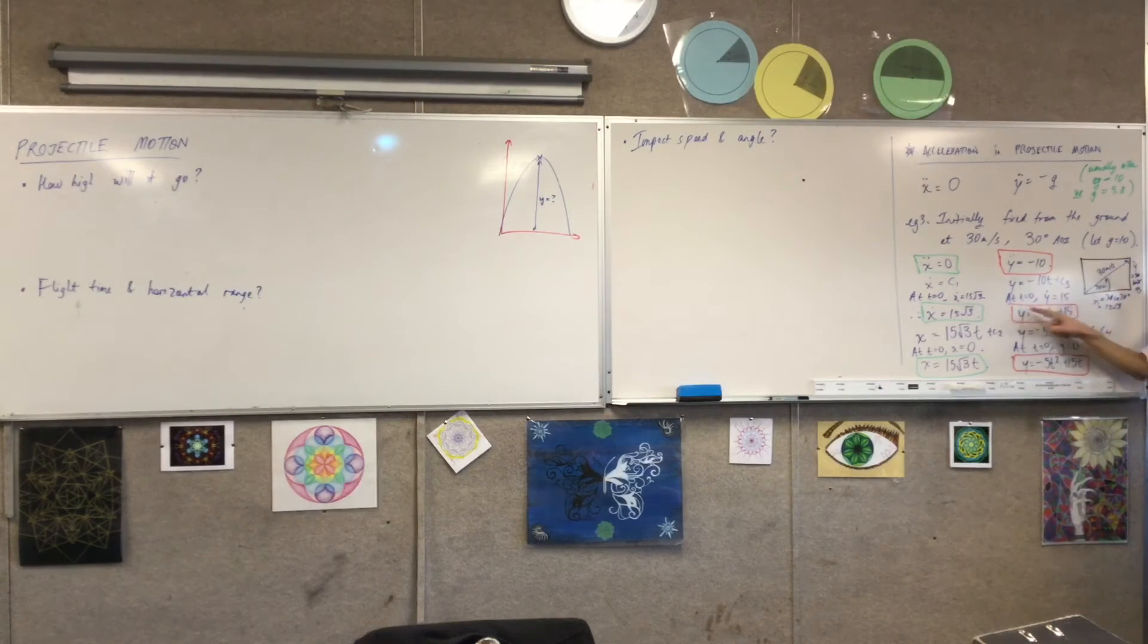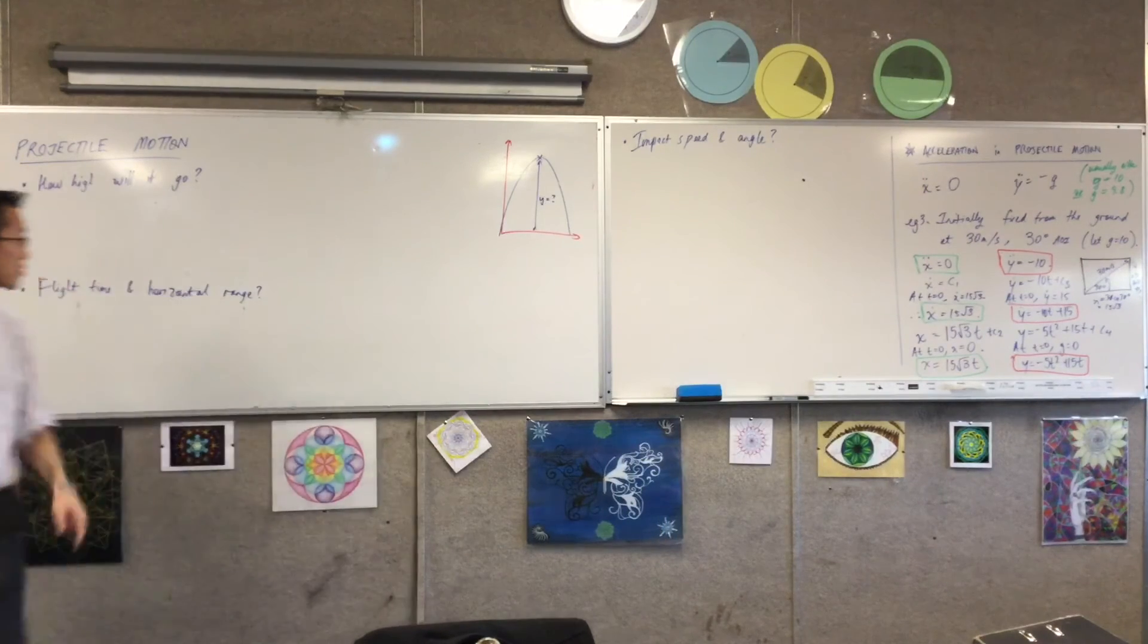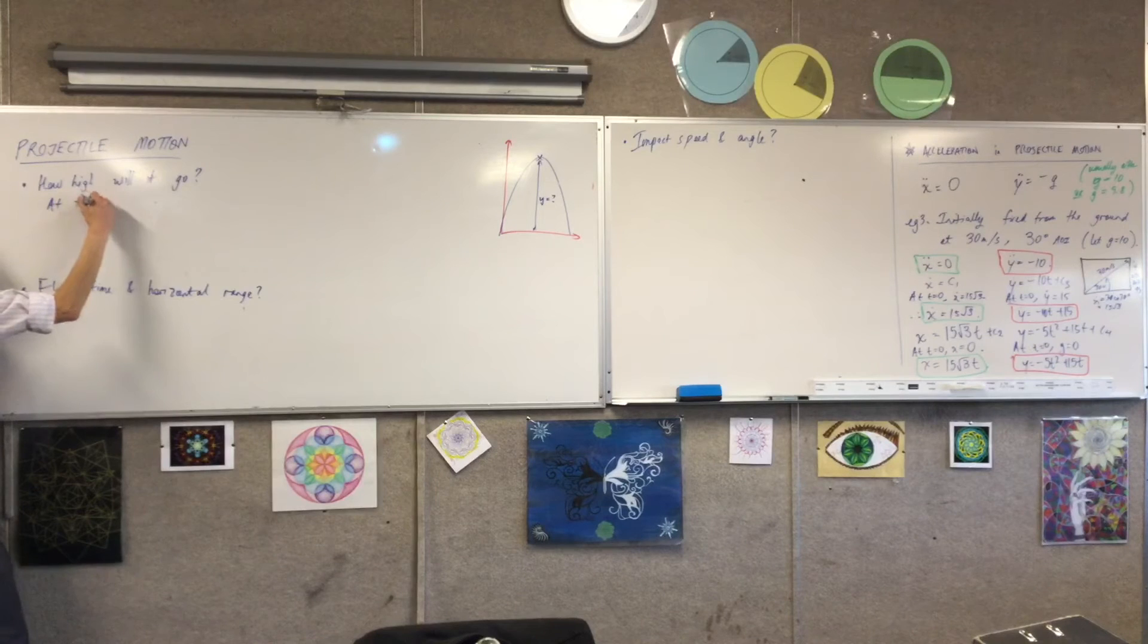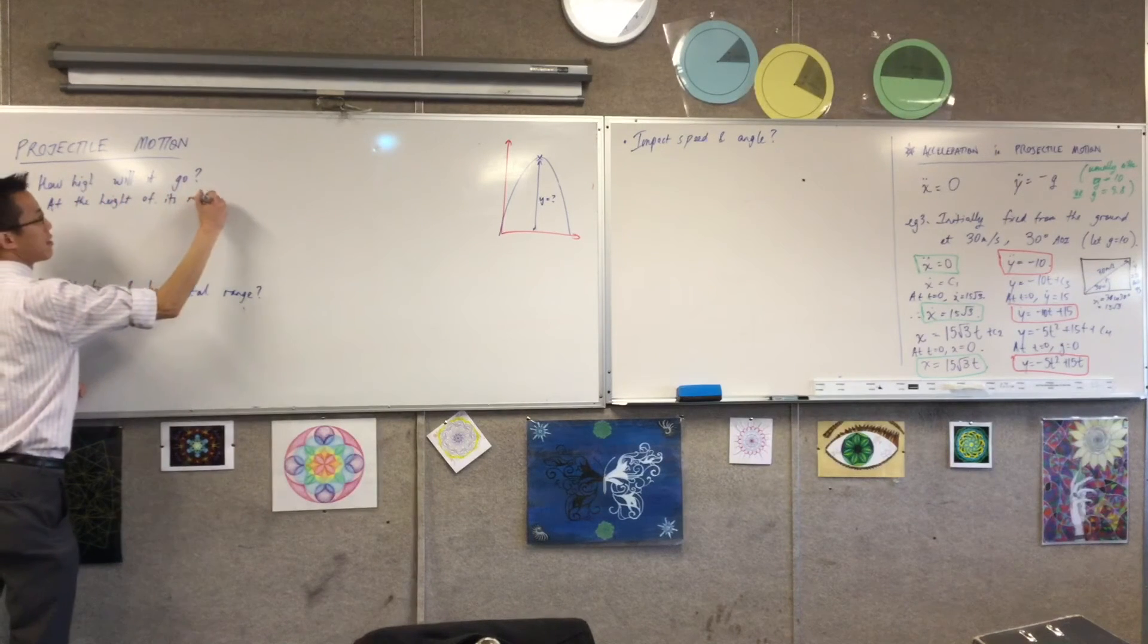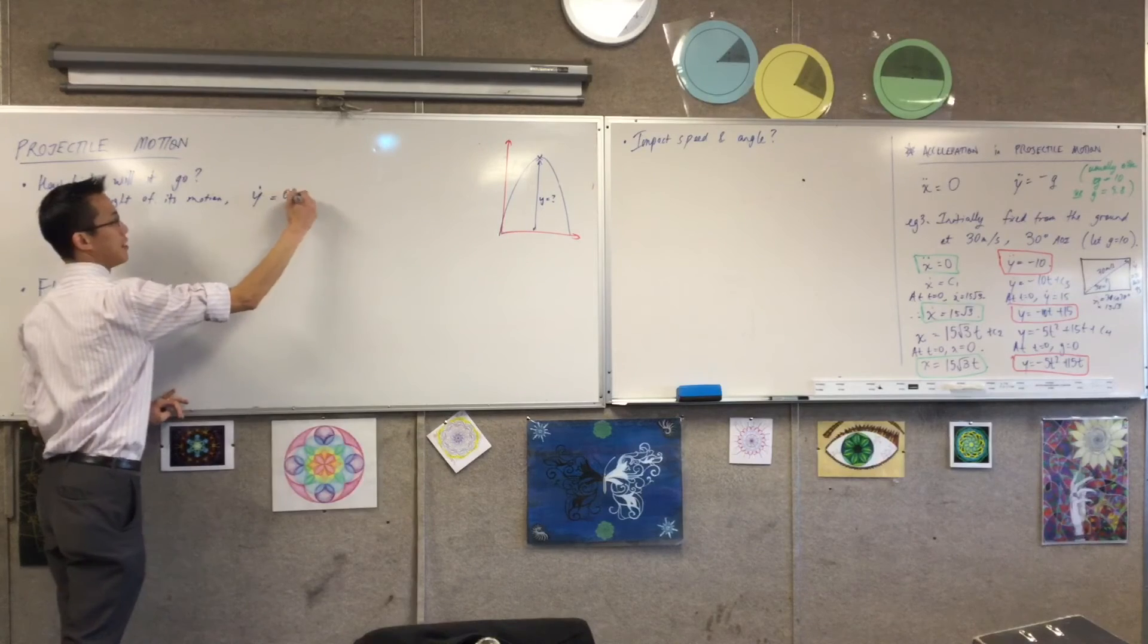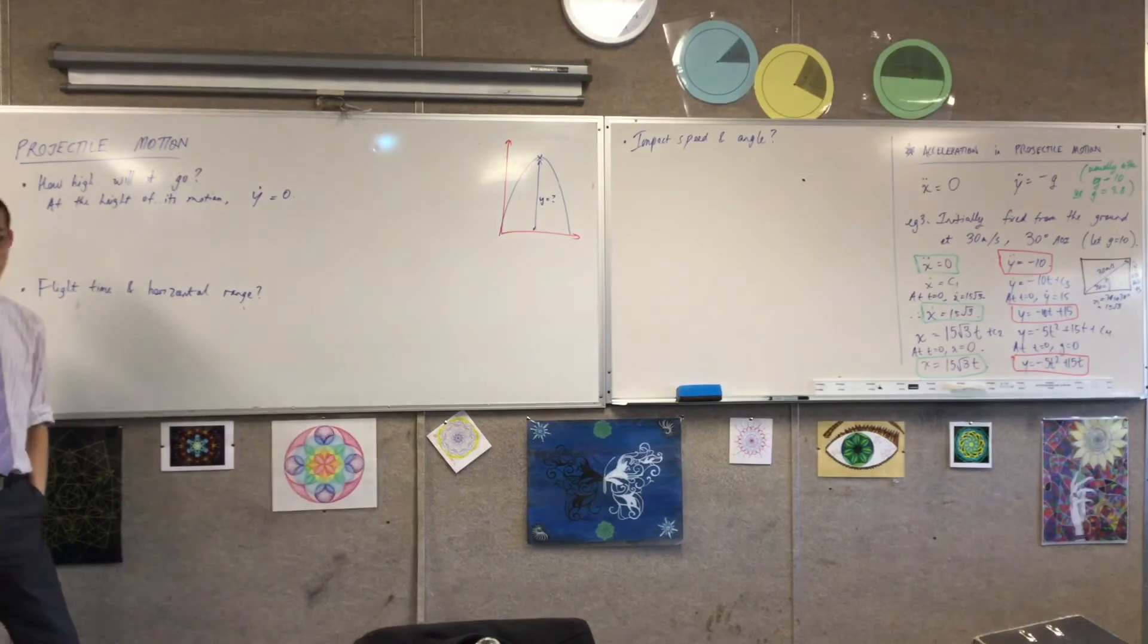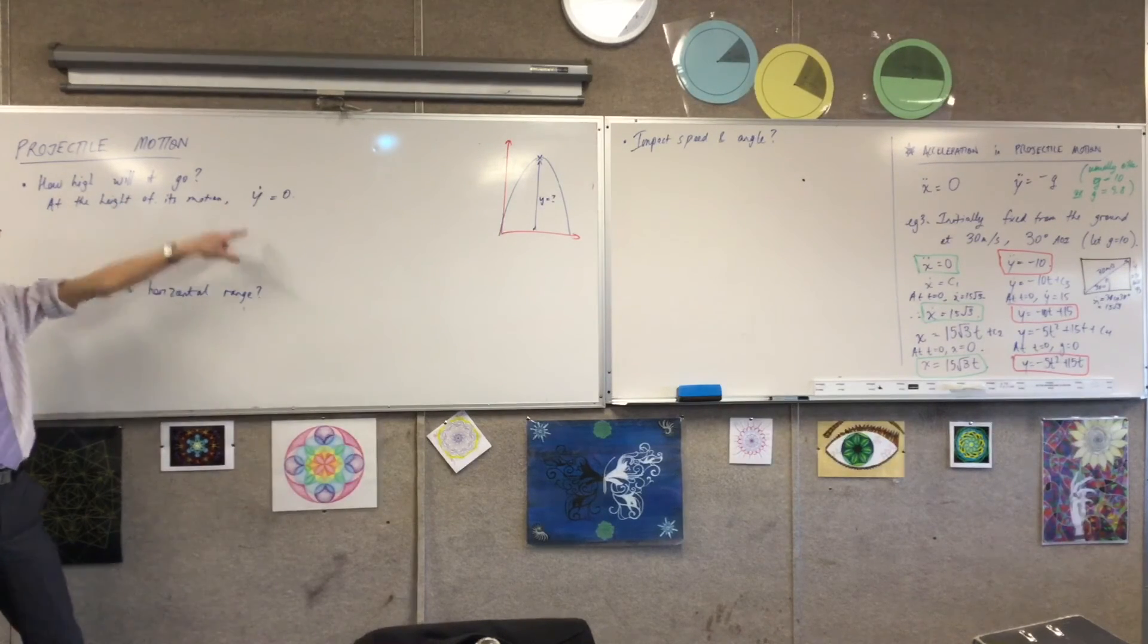So really, this equation here is the most natural one to use. I want the vertical velocity to be zero. Okay, does that make sense? So therefore, to answer this question, right? How high will it go? I say, at the height of its motion, by which I mean, you know, the highest it will actually go. y dot is equal to zero, right? It's not moving up or down at that point. It certainly can't move any further up because it's at the height, and I don't want it any further down, so I'm going to now just solve this equation.